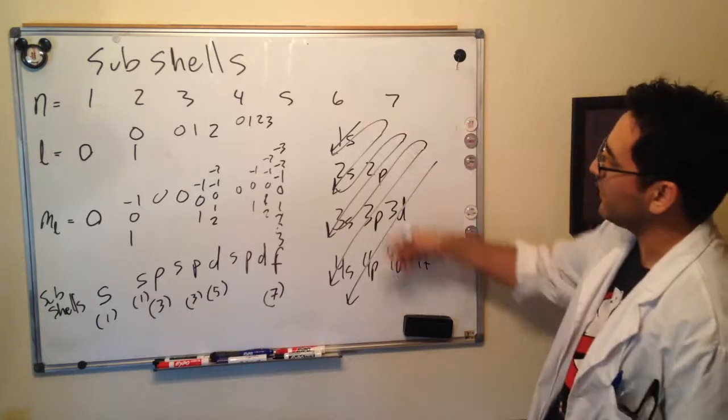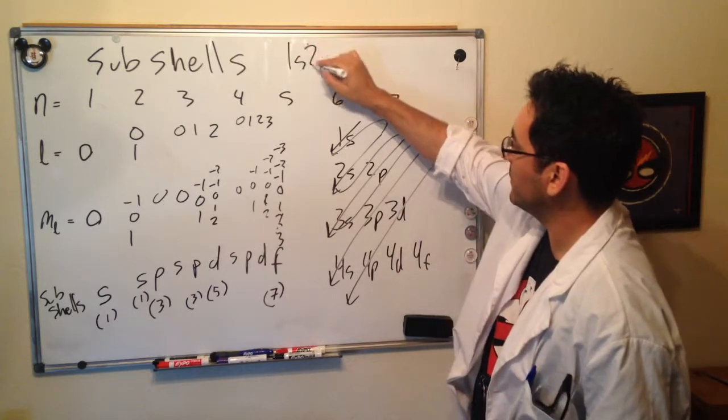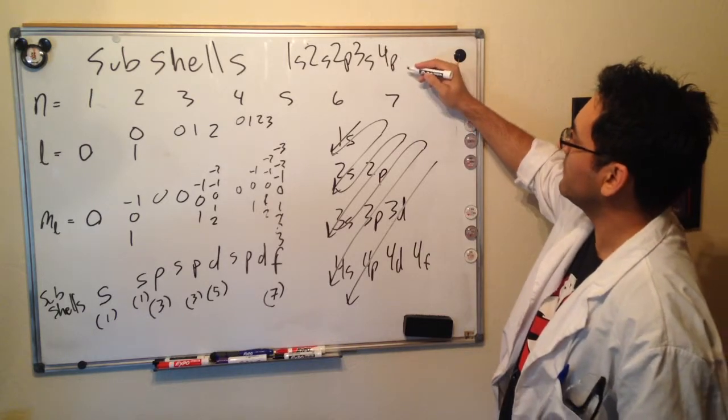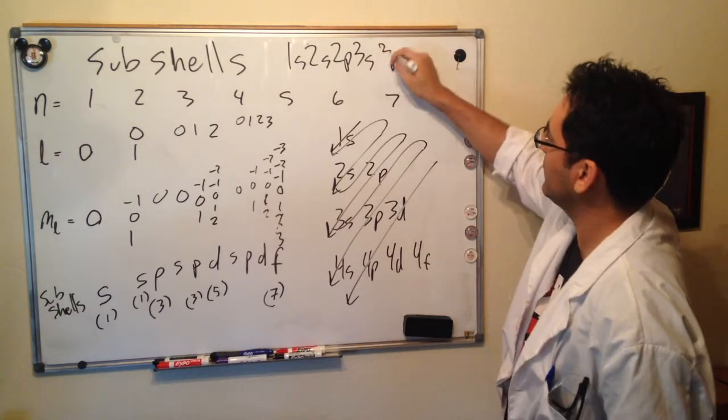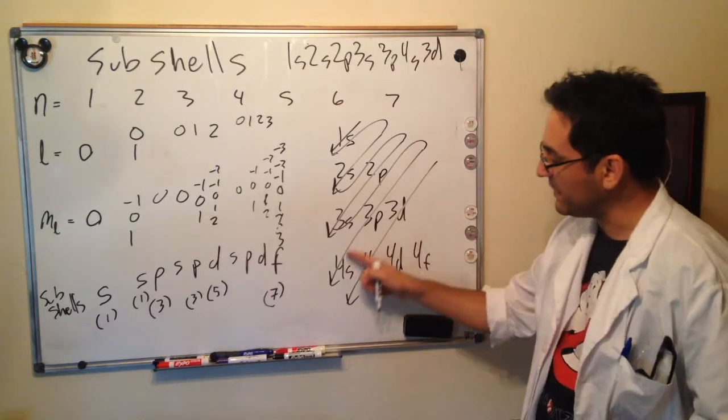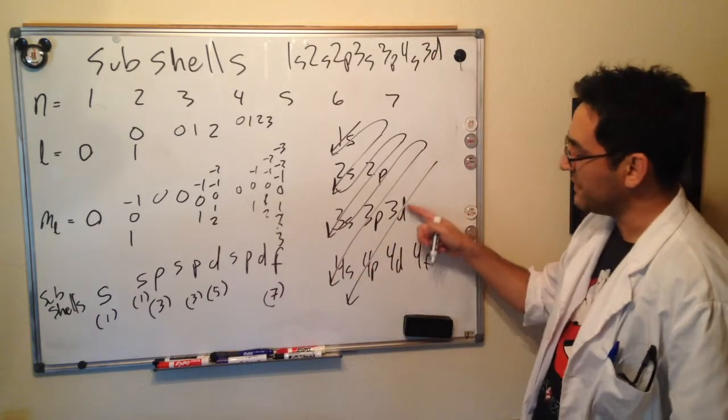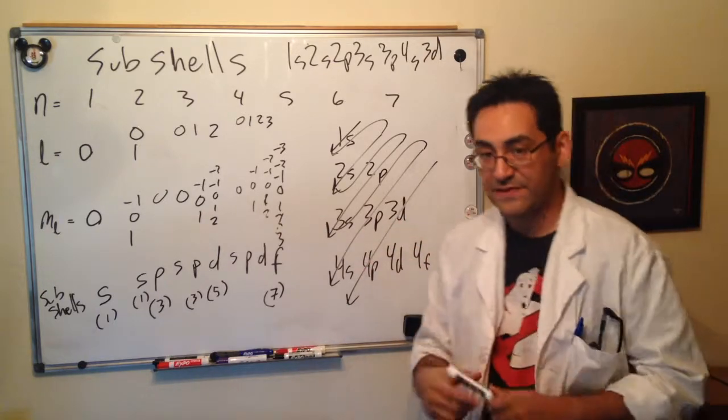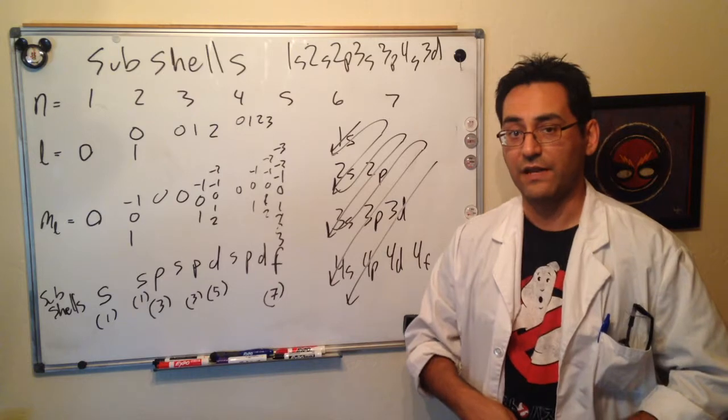And you end up with the order 1s, 2s, 2p, 3s, 4p, sorry, 3p, 4s, 3d. Notice that. 3p, 4s, 3d, 4p. So this can come in very helpful. And this will be the topic of the next video.